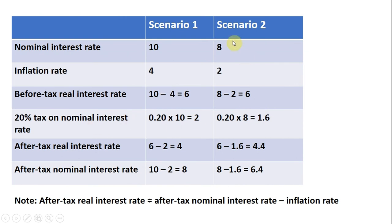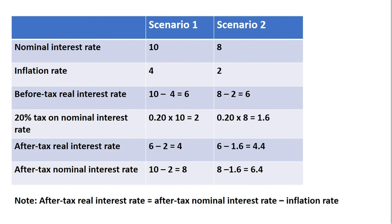Taking 20% of 8 gives us the size of the tax running at 1.6%. So to get the after-tax real interest rate, we take 6 and subtract from it 1.6, leaving us with an after-tax real interest rate of 4.4%. Finally, to get the after-tax nominal interest rate, take 8 — the nominal interest rate — and subtract from it the size of the tax, leaving us with an after-tax nominal interest rate of 6.4%.